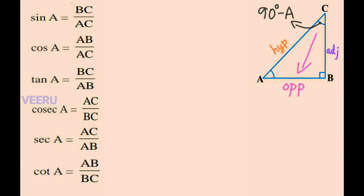With respect to the angle 90 degrees minus A, AB is the opposite side, BC is the adjacent side, and AC is the hypotenuse. Now write six trigonometric ratios with respect to angle 90 degrees minus A.